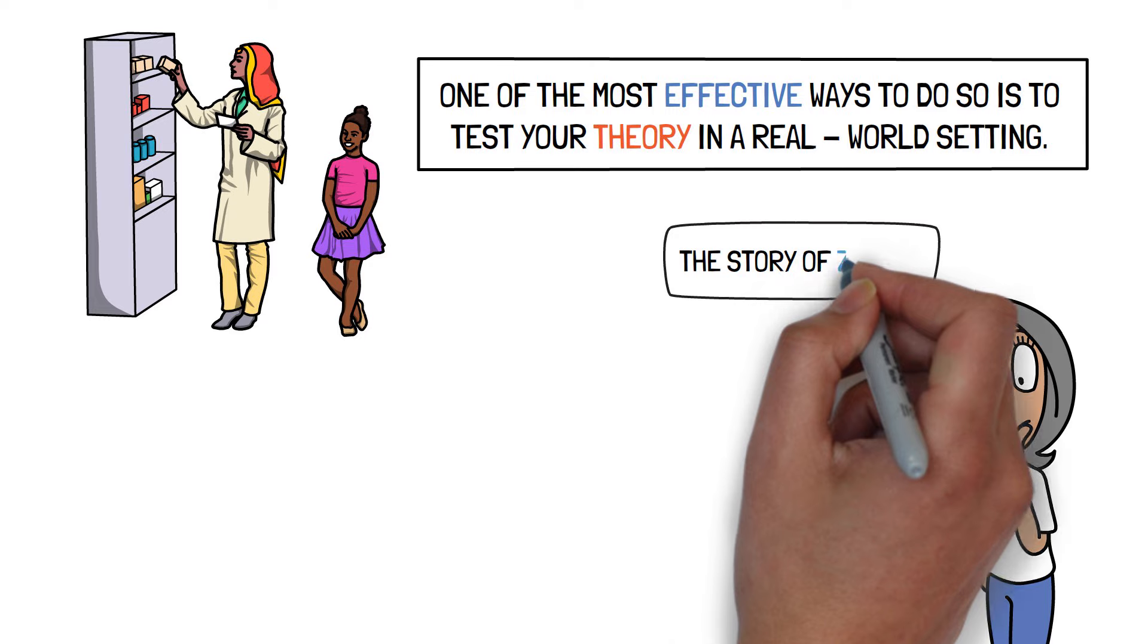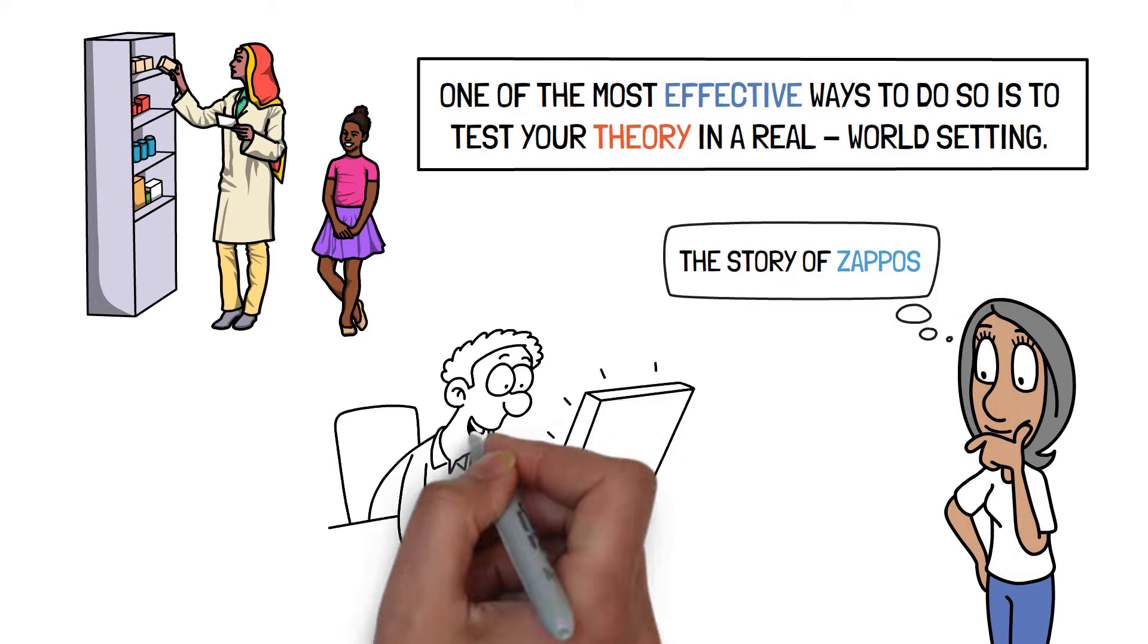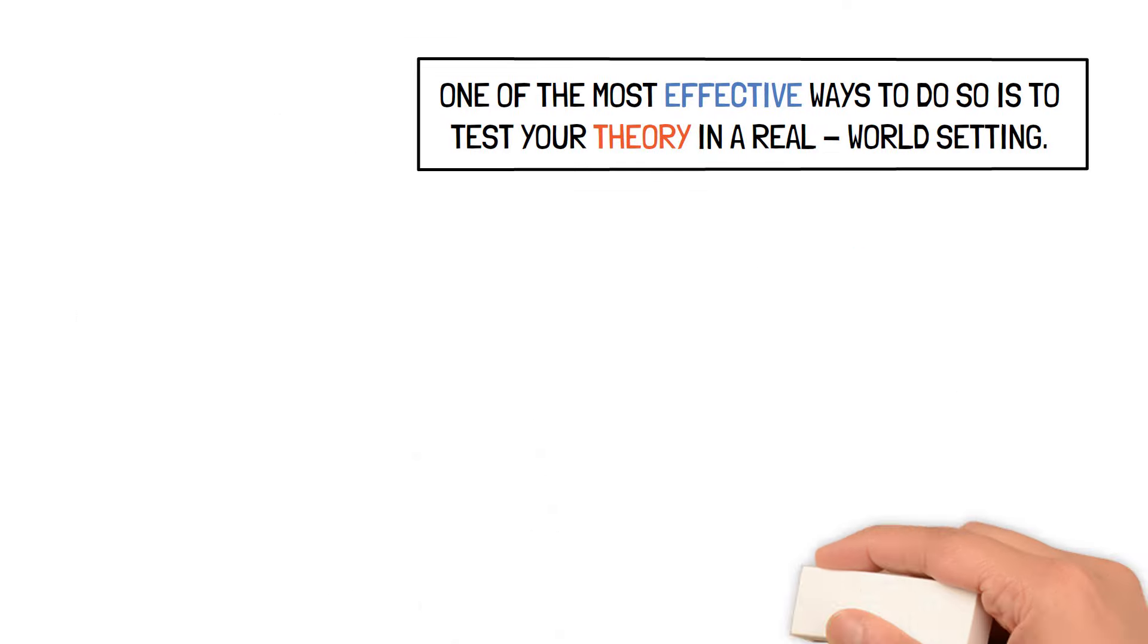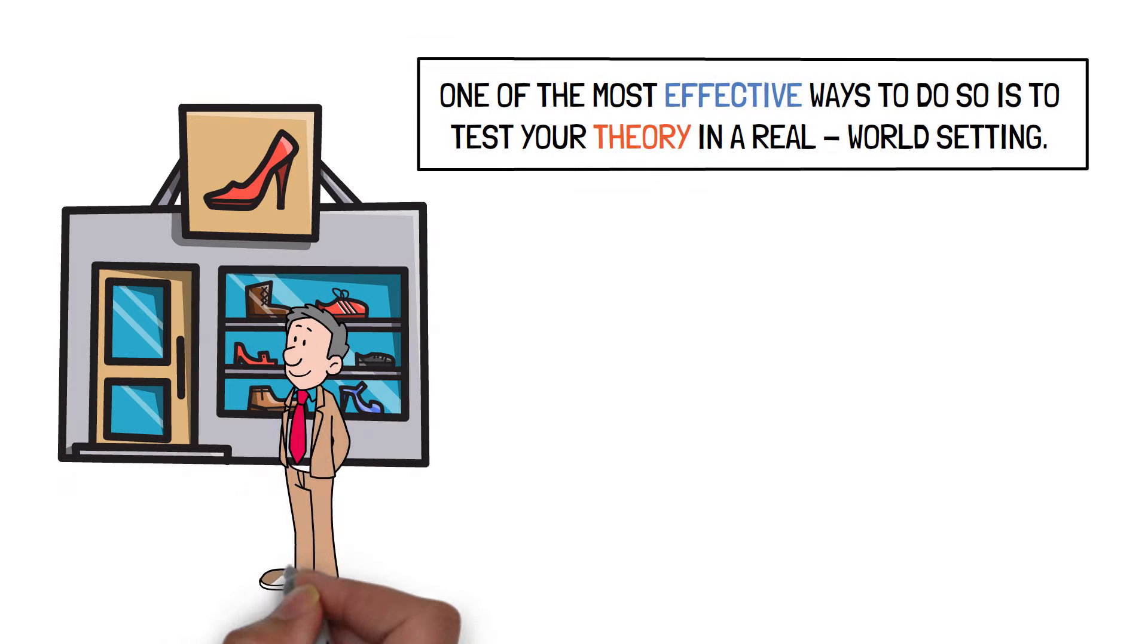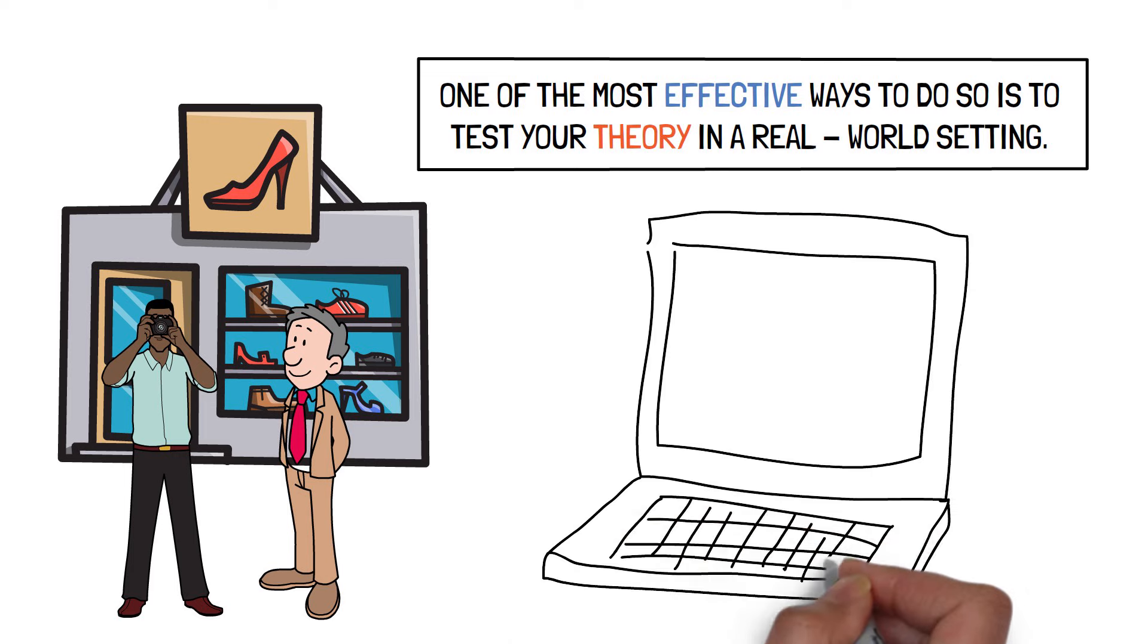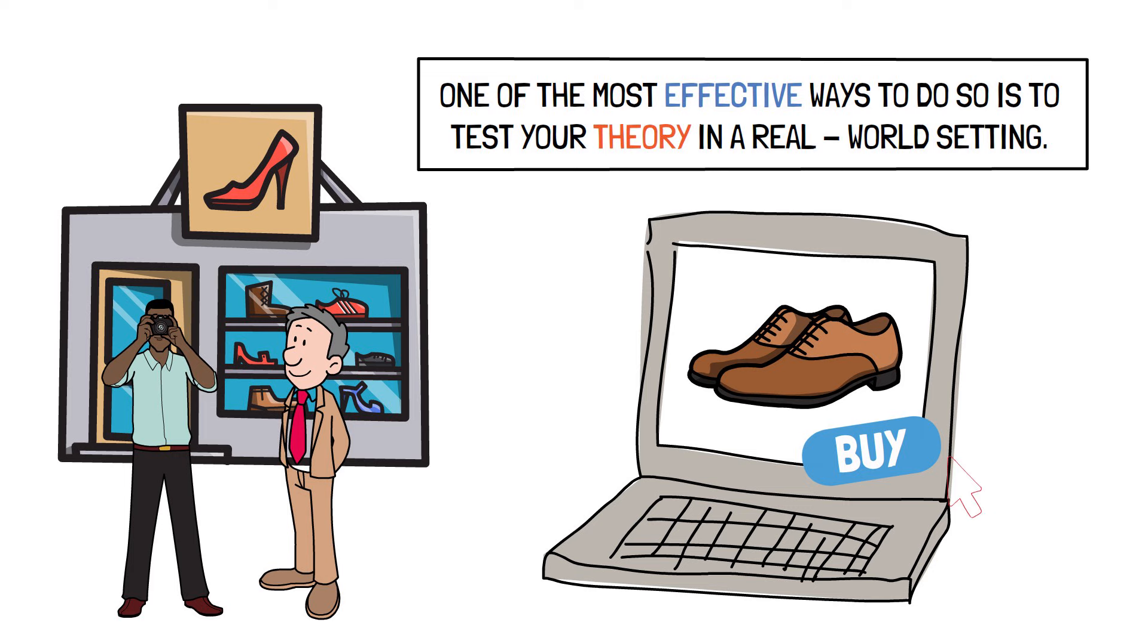Consider the story of Zappos. This startup began with a simple hypothesis: people would be willing to buy shoes online. To put this notion to the test, the entrepreneurs went to shoe retailers and photographed their company's shoes. They used these images to create a fictitious online shoe store to test if anyone would try to buy their shoes.